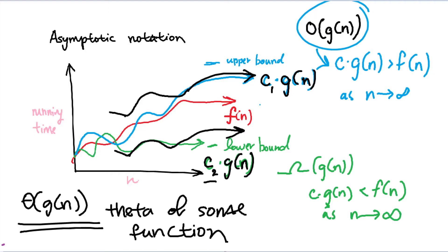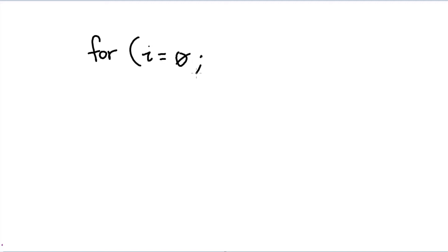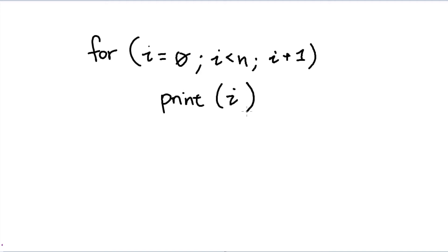Let's look at a slightly more concrete example to understand what we have here. Consider this simple line of code: for some value i, starting at 0, while i is less than n, i plus 1, print i. This is not formal code, but it's close enough to pseudo-code. Keep in mind n is the size of whatever input.